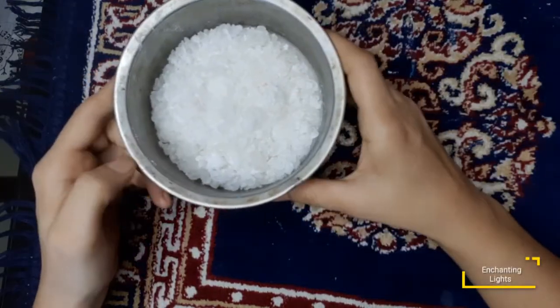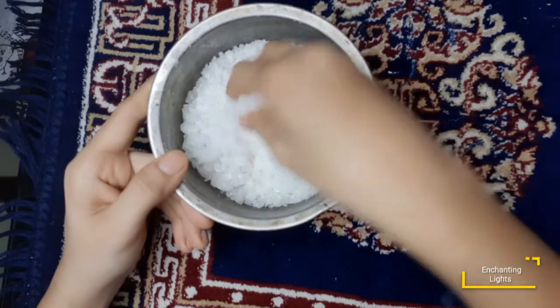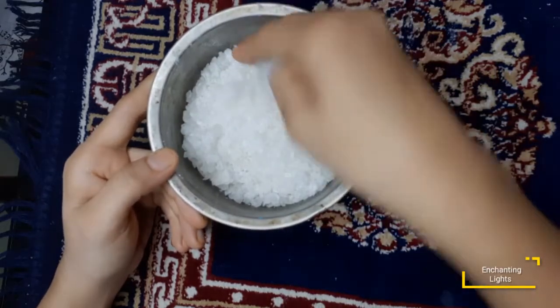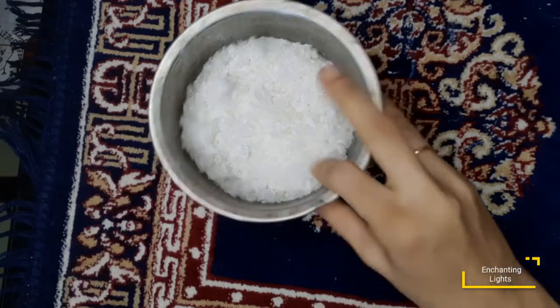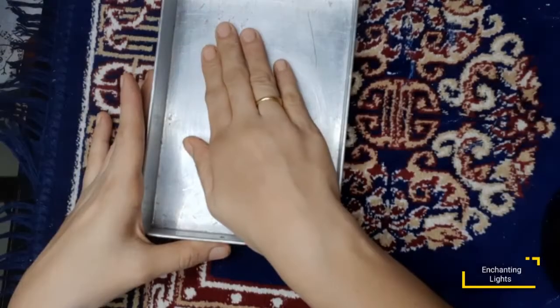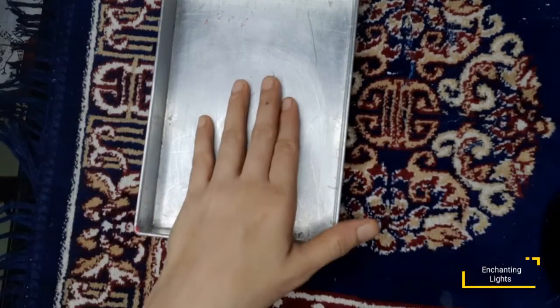Now I'll take paraffin wax, the same one which I use in all my candles. This is in granulated form. I'll melt it and once it melts I'll grease this tin tray and pour the melted wax into my tin tray.